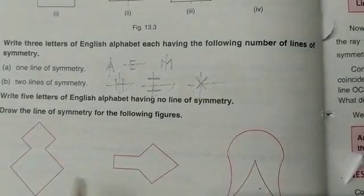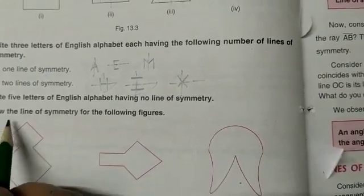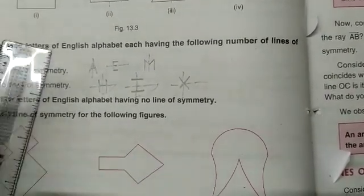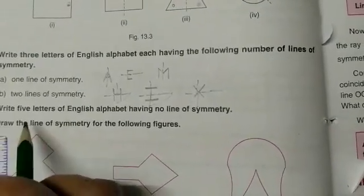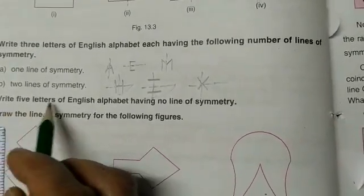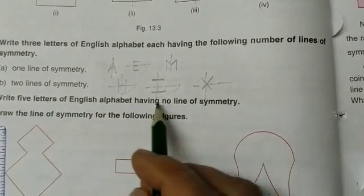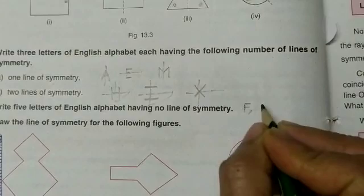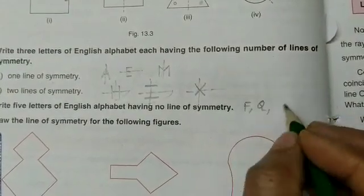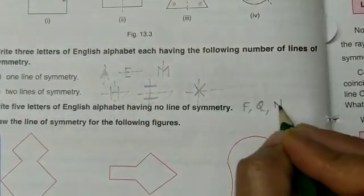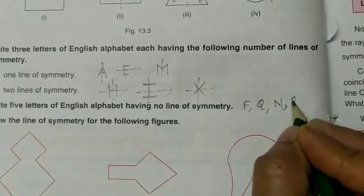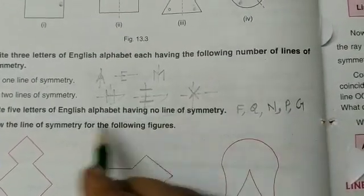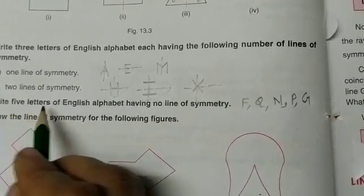After that, question number five: write five letters of English alphabet having no line of symmetry. So you can write letter F, letter Q, letter N, letter P, letter G, etc. Five letters are asked, so you can write these there.